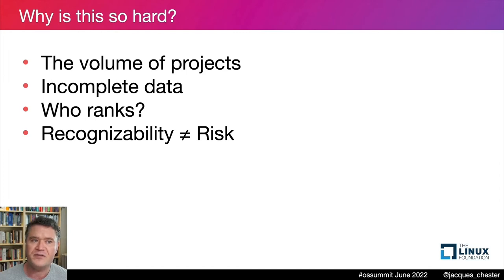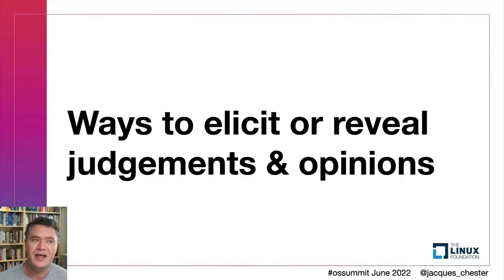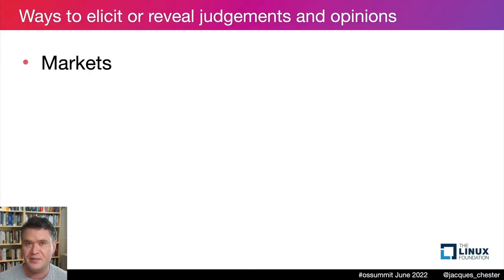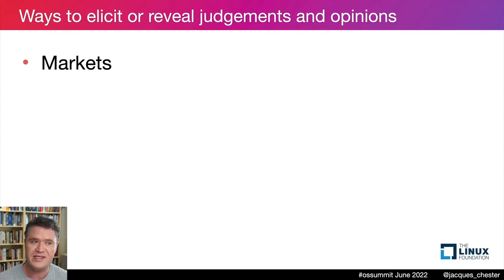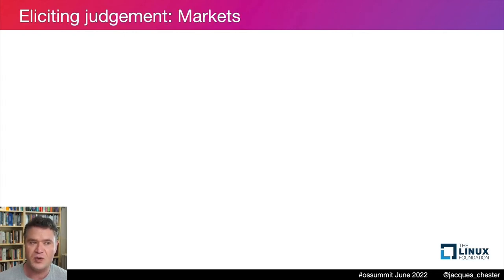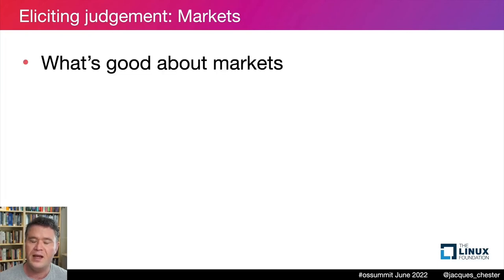Let's talk about our options for eliciting expert opinions. There are three, discussed in escalating order of detail. The first is prediction markets. In a prediction market, participants buy and sell contracts that pay out a certain amount if a certain event occurs. If you think something is very likely, you'd rationally bid up to near the total payout; if you think it's unlikely, you'd sell your contract to someone else. The price therefore fluctuates according to market consensus on how likely something is to occur.